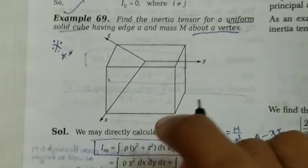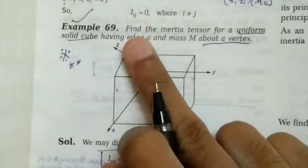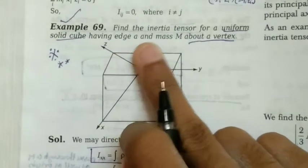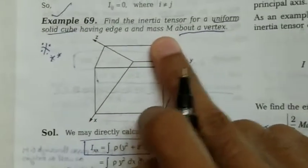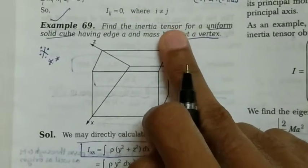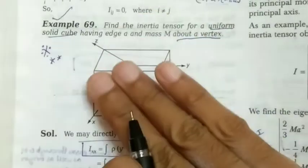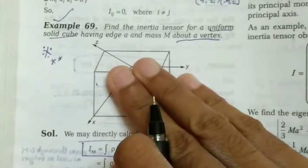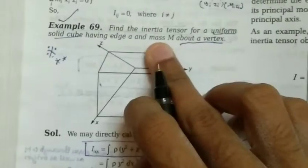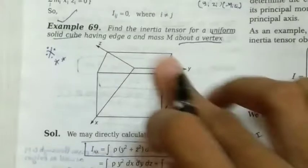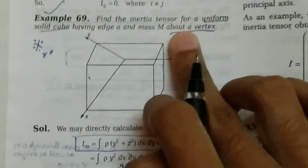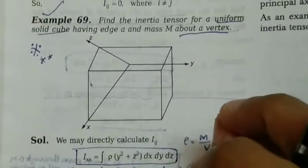Let's see another problem in classical mechanics: find the inertia tensor for a uniform solid cube having edge a and mass m about a vertex. We need to find the tensor form of the inertia for a uniform solid cube. Uniform means uniform distribution of mass, the cube has edge length a, mass M, and we need to find the moment of inertia about one of its vertices, taking that vertex as the reference point.